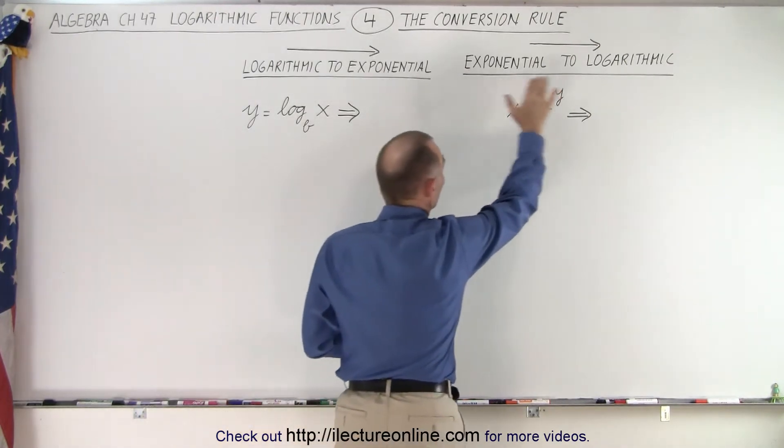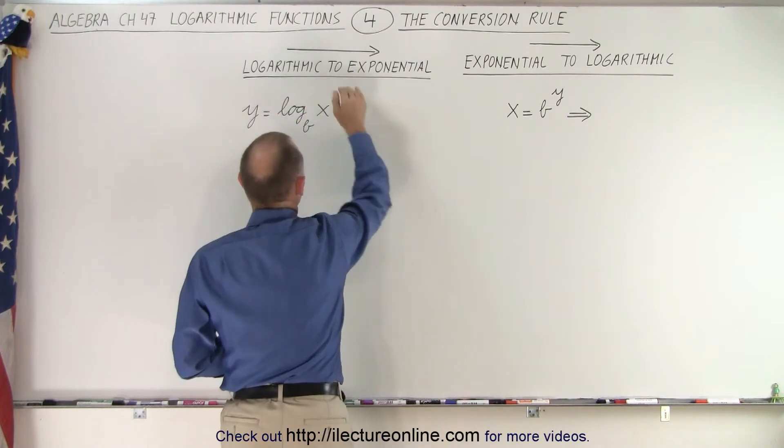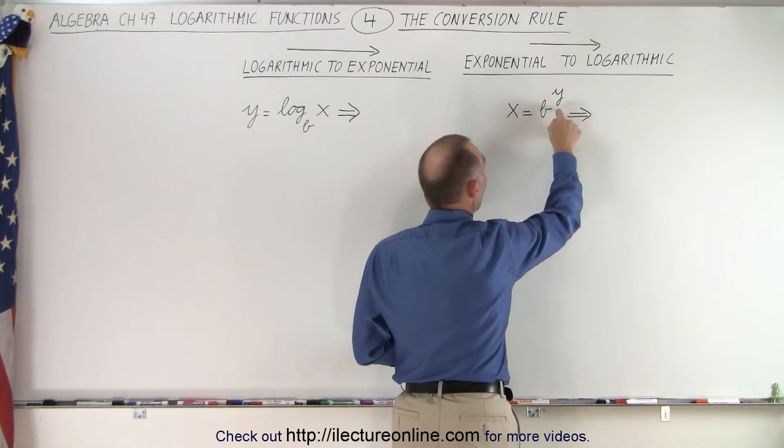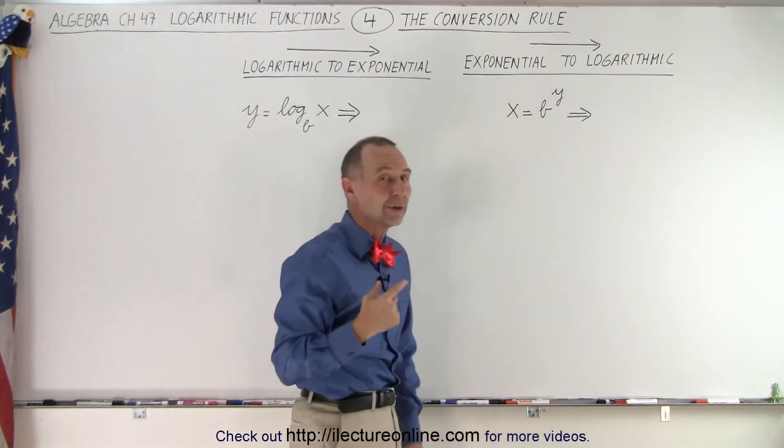So we have exponential to logarithmic and logarithmic to exponential form. Let's start with the equation x equals b to the y. How do we put that into logarithmic form?